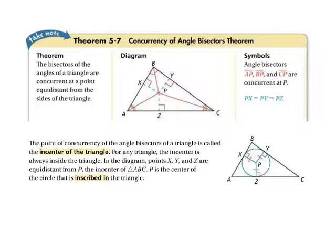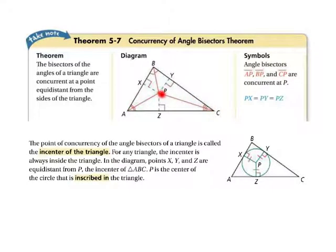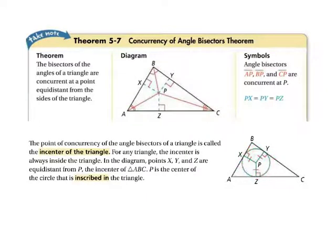Here we go with more vocabulary. Let's take a look at the concurrency of angle bisectors theorem. The theorem says that the bisectors of the angles of a triangle are concurrent at a point equidistant from the sides of the triangle. Segment BP is the bisector of angle XBY. Where it meets with segment AP and segment CP, the other angle bisectors, point P is your point of concurrency of the angle bisectors, called the incenter. For any triangle, the incenter is always going to be inside that triangle. Points X, Y, and Z are all equidistant from point P, the incenter, and point P is the center of a circle inscribed in the triangle. These distances are all congruent — equal length.